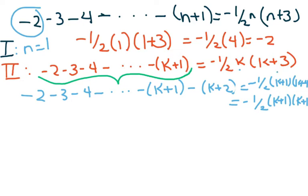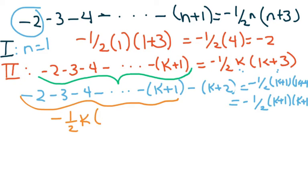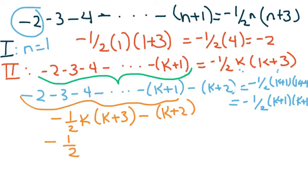The whole left side equals negative one-half k times (k plus three) and then we subtract (k plus two). We factor out negative one-half, giving us k times (k plus 3) minus two times (k plus 2).